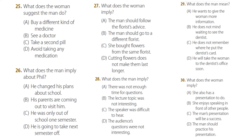Number thirty. 'Tomorrow I have my big presentation in anthropology class. I'm really worried about speaking in front of the class.' 'You always say that, and then you always do really well. You have nothing to worry about.' What does the woman imply?